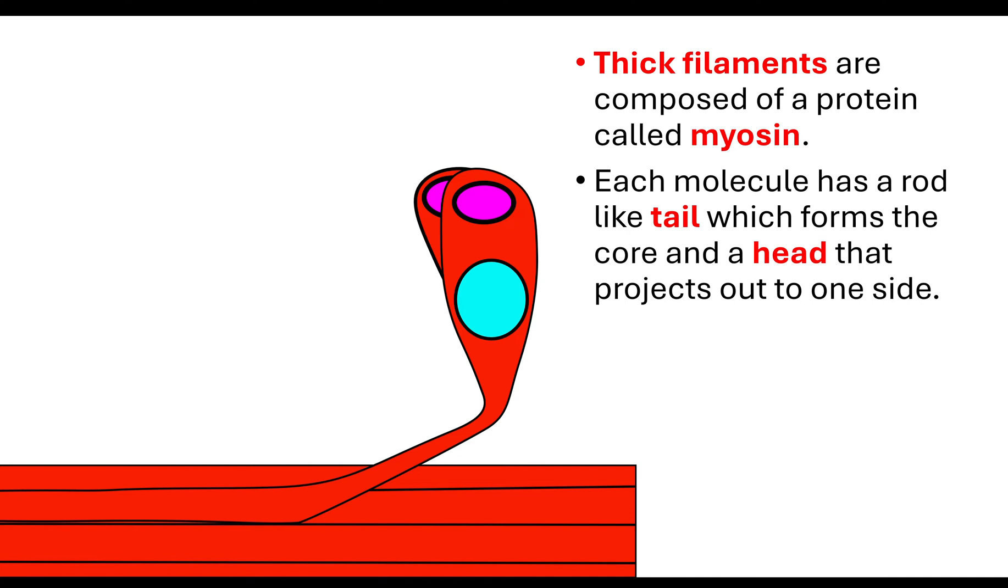That forms what's known as the core. That's what makes it a thick filament. What it also has is this bulbous head that projects out to one side.